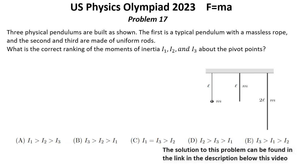Problem number 17. Three physical pendulums are built as shown. The first is a typical pendulum with a massless rope, and the second and third are made of uniform rods. What is the correct ranking of the moments of inertia I₁, I₂, and I₃ about the pivot points?